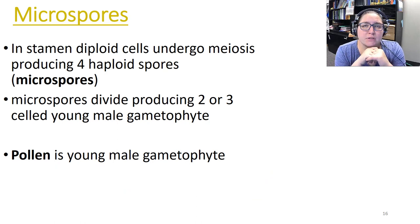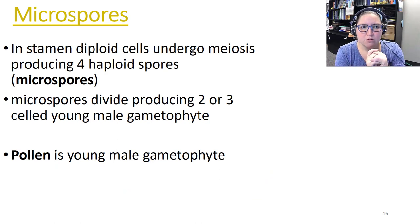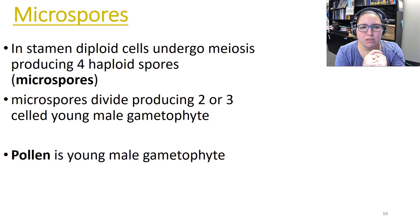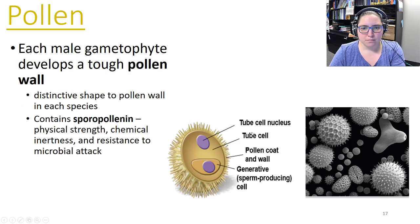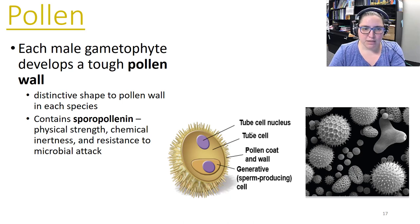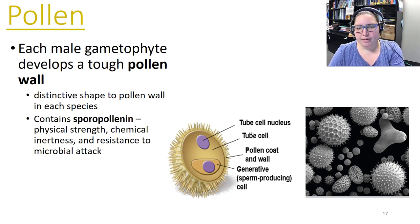Microspores are smaller — mega is big, micro is small. In the stamen, diploid cells undergo meiosis and produce four haploid microspores. The microspores divide to produce a two- or three-celled young male gametophyte generation — pollen is that young male gametophyte. Each male gametophyte develops a tough pollen wall containing sporopollenin, which gives pollen physical strength, chemical inertness, and resistance to microbial attack.